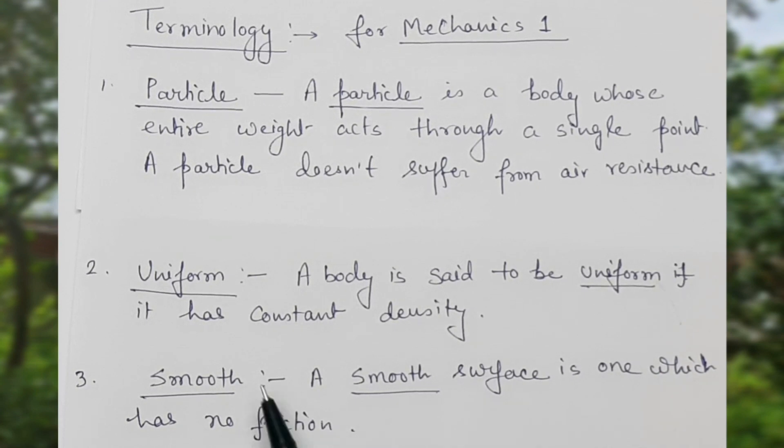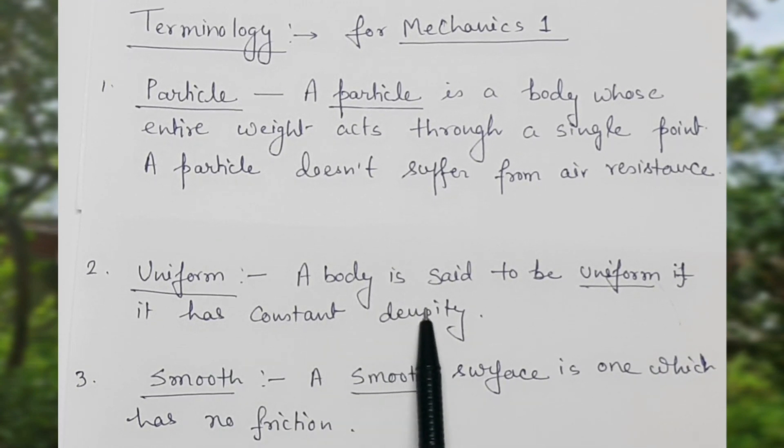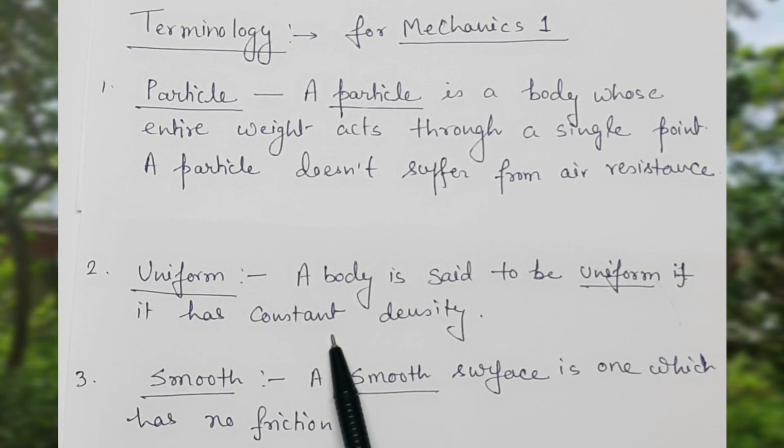The second one is uniform. A body is said to be uniform if it has constant density.